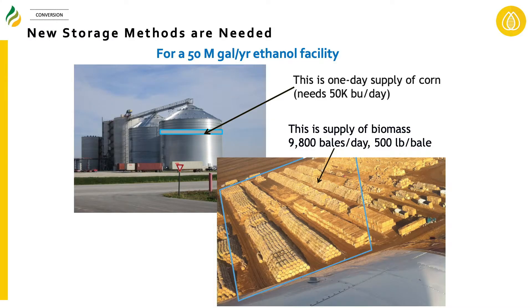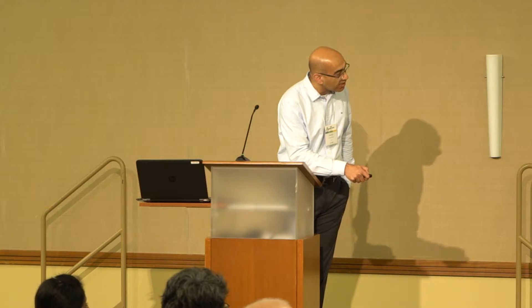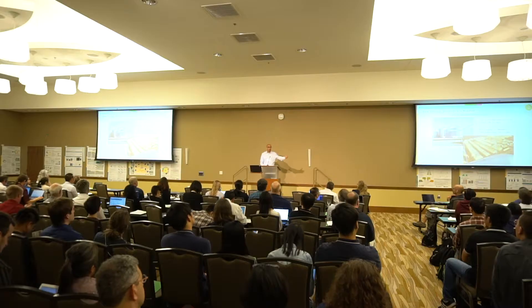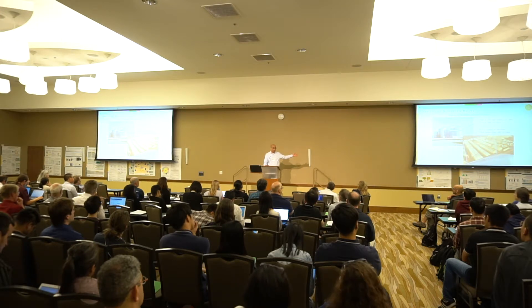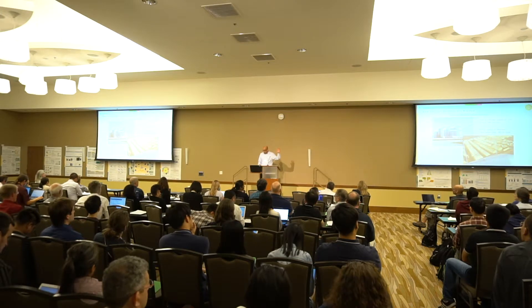The first challenge is just the storage of biomass. One day of feedstock for a cellulosic ethanol facility requires about 1,000 bales — just to give you an idea of scale, there's a semi-truck right there in comparison. You have to store this material outside, exposed to the elements. If there's a lightning strike, the whole thing goes up in flames, which actually happened at one cellulosic biorefinery in the United States.